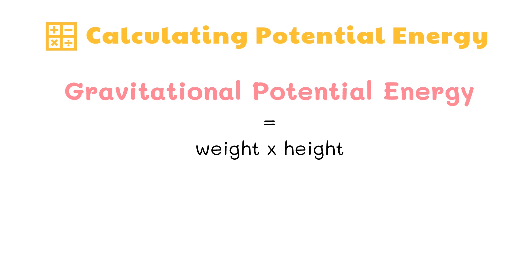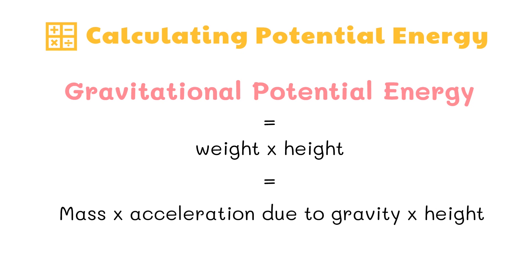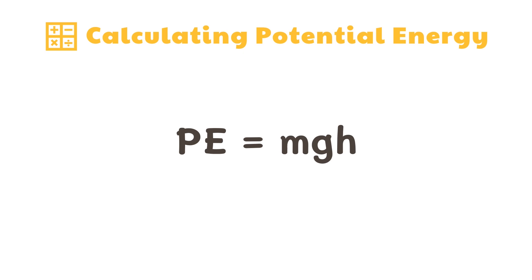Since weight is equal to mass times acceleration due to gravity, our formula for potential energy is mass times acceleration due to gravity times height. Potential energy is expressed as: PE = mgh, where PE is potential energy, m is mass in kilograms, g is acceleration due to gravity with a constant of 9.8 meters per second squared, and h is height in meters.